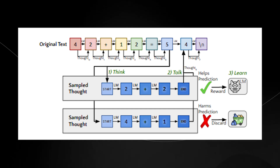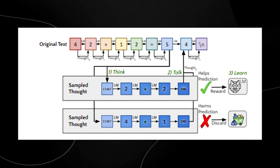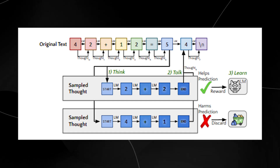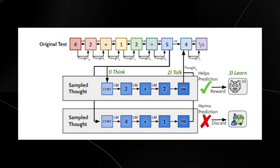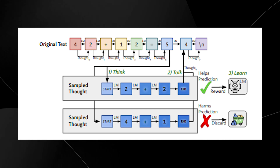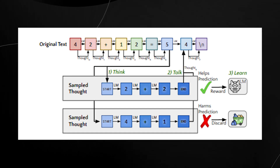Step three: Learn. The model is updated based on which thoughts led to better predictions, receiving a reward signal that encourages it to generate more useful thoughts in the future. Thoughts that improve prediction accuracy are reinforced.